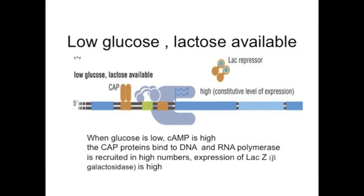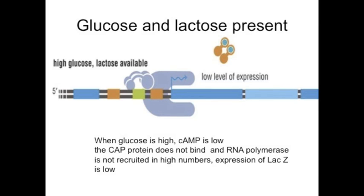This leads to a high level of expression of beta-galactosidase. On the other hand, when glucose is high and lactose is available, because there is a low level of cyclic AMP, the CAP protein is no longer binding to the DNA, and therefore it is not recruiting RNA polymerase at a high level. So there is lower expression of lacZ, thus allowing the bacteria to prefer the use of glucose over lactose.